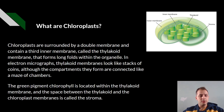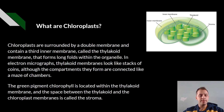In electron micrographs, the thylakoid membranes look like stacks of coins, although the compartments they form are connected like a maze of chambers. The green pigment of chlorophyll is located within the thylakoid membrane, and the space between the thylakoid and the chloroplast membranes is called the stroma.